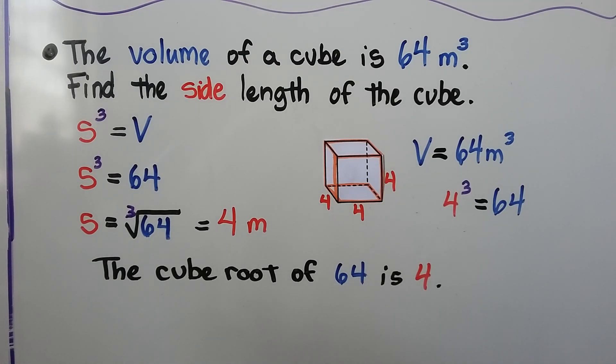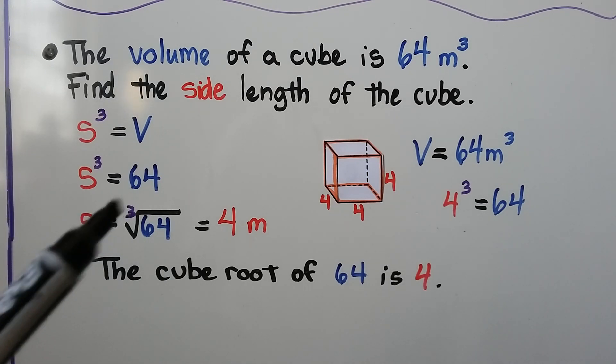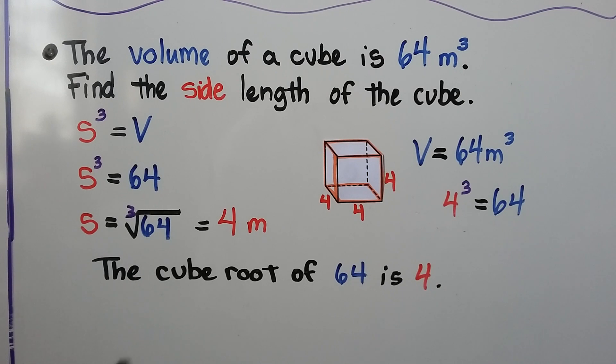The volume of a cube is 64 meters cubed. Find the side length of the cube. So we know that the volume is going to equal the side cubed. That means we need to find the cube root of 64. Well, 4 times 4 times 4, 4 cubed is equal to 64. The cube root of 64 is 4. The side length is 4 meters.